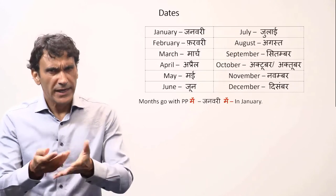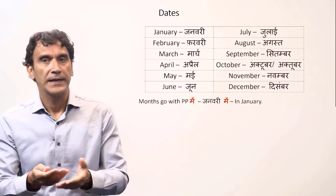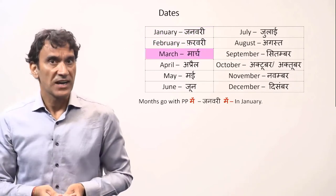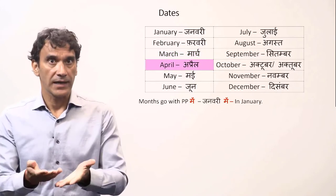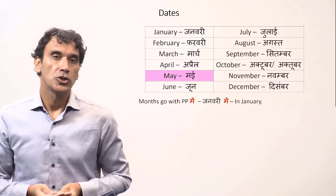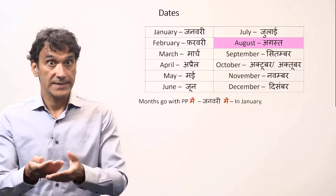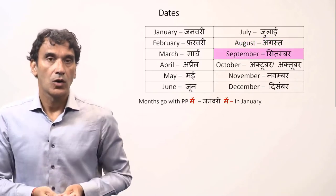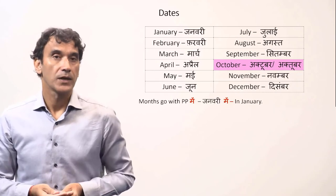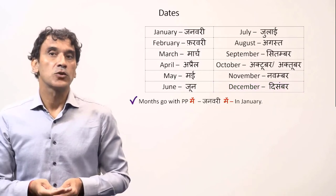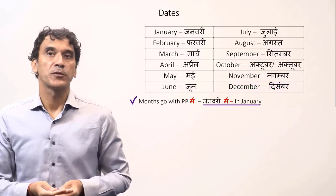Let's now learn how to say dates in Hindi. First, we should learn how the European calendar months are pronounced in Hindi — they are quite similar to English with a slight Indian accent. January is 'january', February is 'fervari', March is 'marsh', April is 'april', May is 'may', June is 'june', July is 'july', August is 'august', September is 'september', October is 'october', November is 'november', and December is 'december'. The months go with the postposition 'may' — 'in January' would be 'january may'.